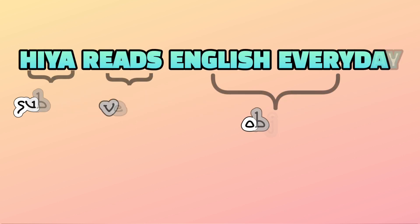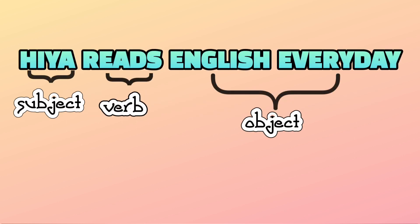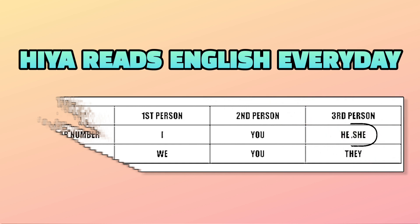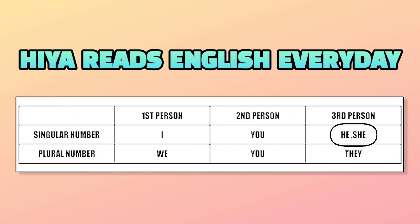This is also an example of habitual truth, so we have used present tense here. But why have we used 'reads' and not 'read'? If a sentence is in present indefinite tense and the subject is third person singular number, then we have to add S or ES after the verb.